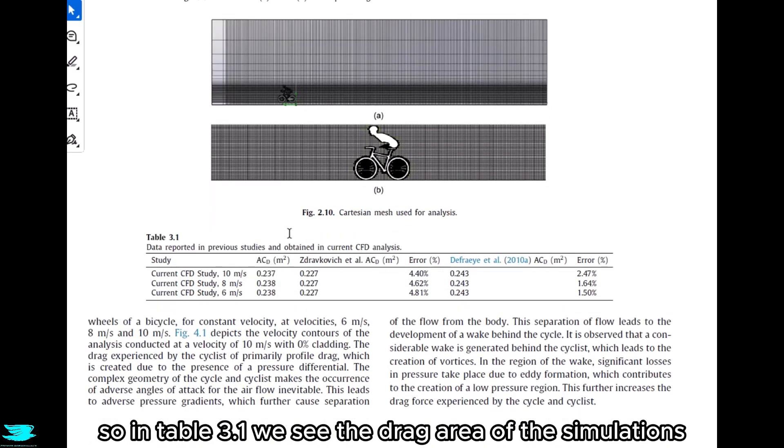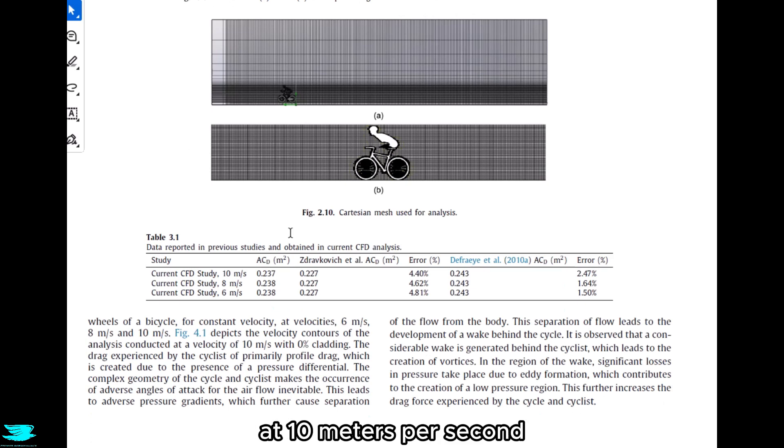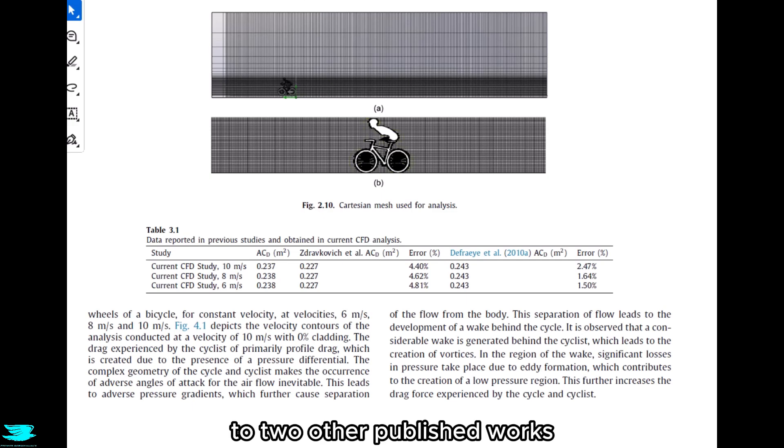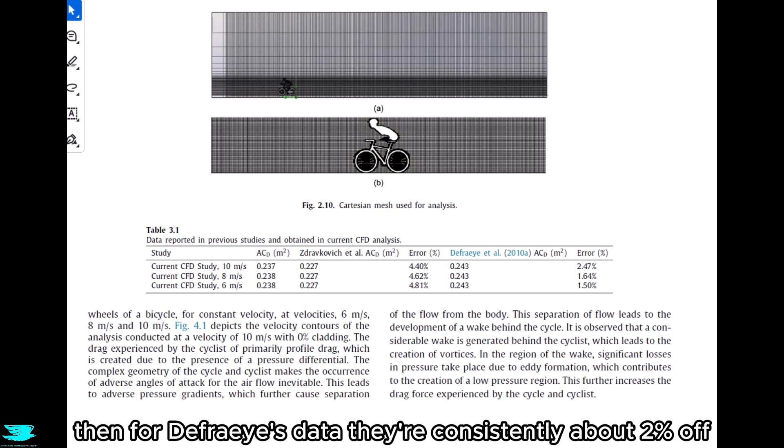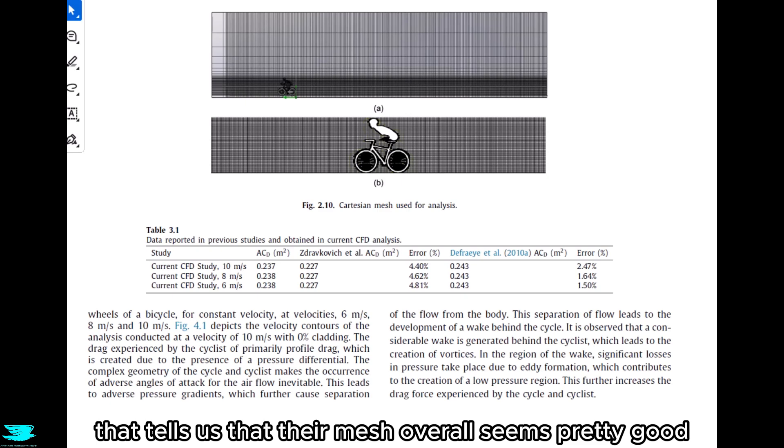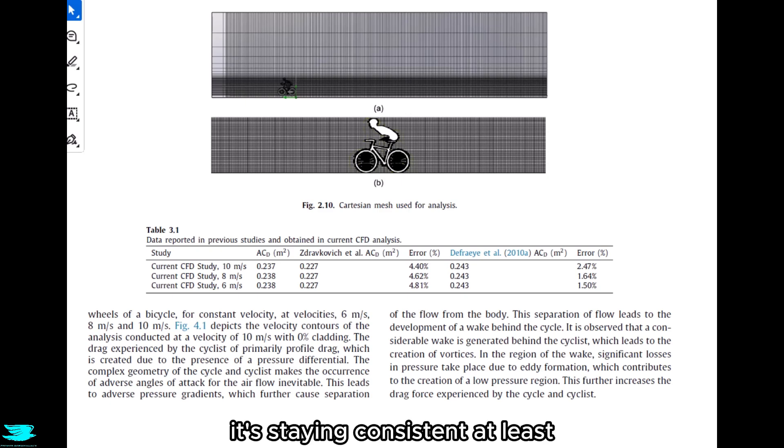In table 3.1, we see the drag area of the simulations at 10 meters per second, 8 meters per second, and 6 meters per second. They compare their values to two other published works. The thing that stands out to me is that their values, while off by a few percent, they are consistently off by that amount. For example, comparing to Dravkovic's values, they are consistently about 4.5 percent off. Then for DeFrey's data, they're consistently about 2 percent off. That's pretty impressive. That tells us that their mesh overall seems pretty good at staying consistent at least. So I think their force data can be trusted.